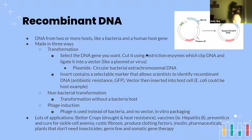Then you insert a selectable marker that allows scientists to see if the host cell actually takes up the vector. A selectable marker is basically anything that lets you know of the existence of a gene. For example, antibiotic resistance — if the host cells develop antibiotic resistance, you know your transformation worked. Also, GFP, green fluorescent protein, allows a cell to glow; it's found in jellyfish, and its discoverer won the Nobel Prize.